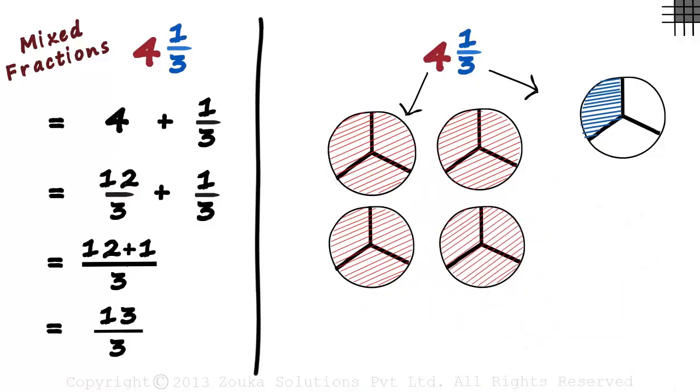What did we just do? We shaded 12 1 by 3 parts: 1, 2, 3, 4, 5, 6, 7, 8, 9, and 10, 11, 12. This should make it clear.